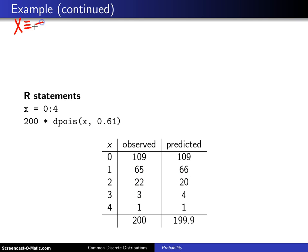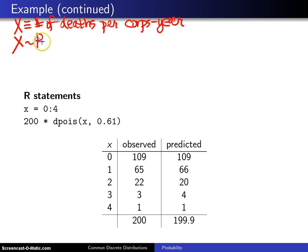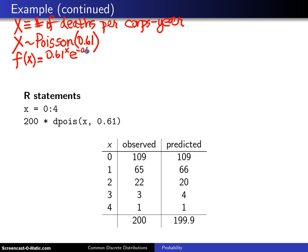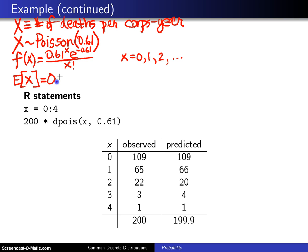If we let the random variable X be the number of deaths due to horse kicks per corps-year, then our best guess from the dataset is that X is Poisson with a parameter of 0.61. Its probability mass function is (0.61^x × e^(−0.61)) / x!, for x = 0, 1, 2, ... The expected number of deaths per corps-year is just the rate lambda, estimated to be 0.61.